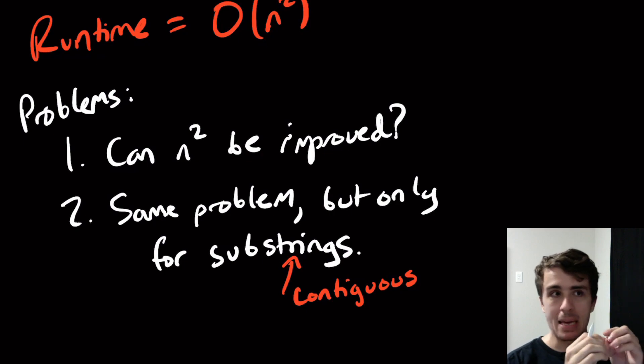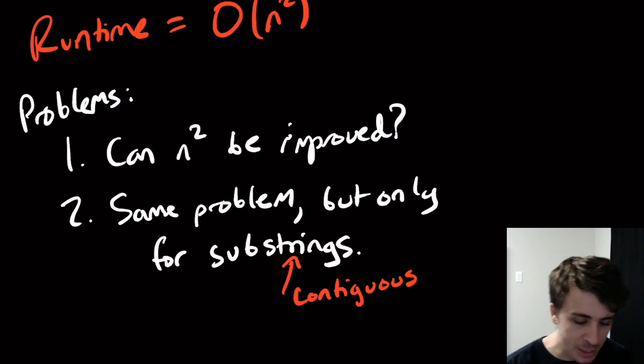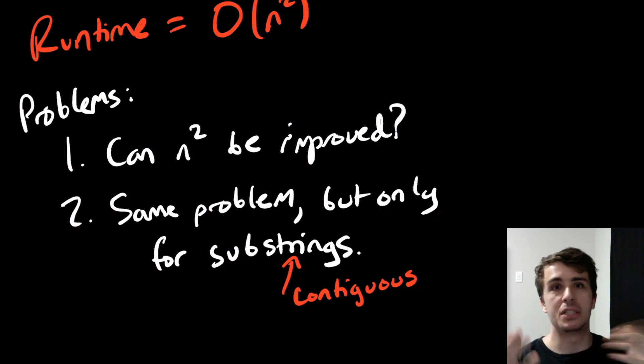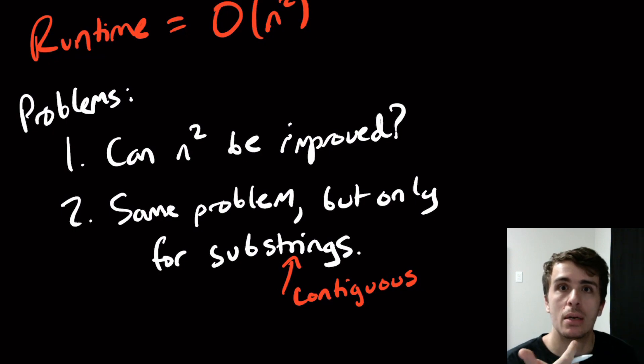Or maybe substrings are faster. Then maybe we can look at subsequences that only skip one element or skip two elements. Maybe we could do better than n squared on those. That is something that I want you to work on in the comments.